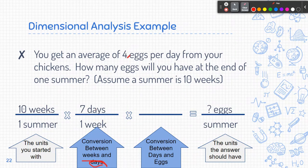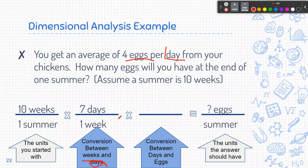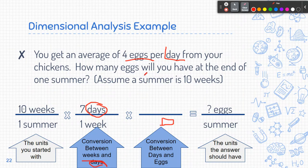And I have per day, so that's one day. And because I have days on the top, that means I'm going to want days on the bottom. Okay, so I'm going to have 4 eggs then go on top and one day go on the bottom.